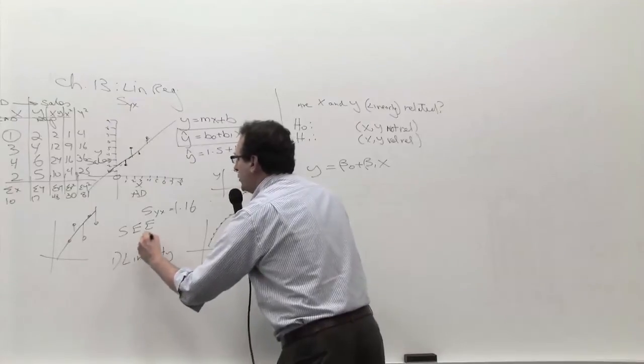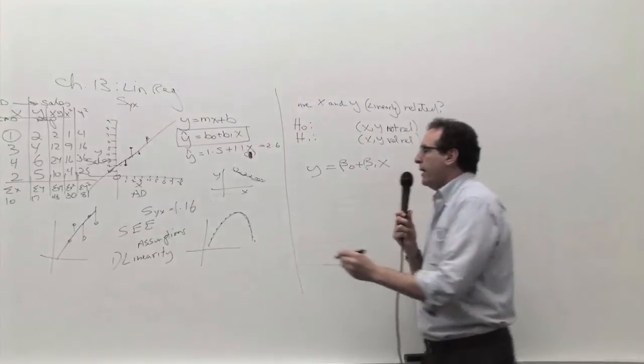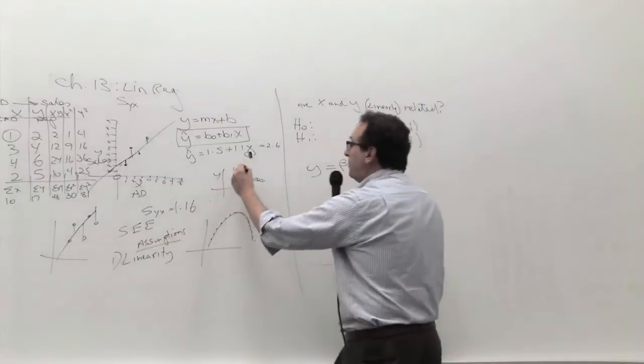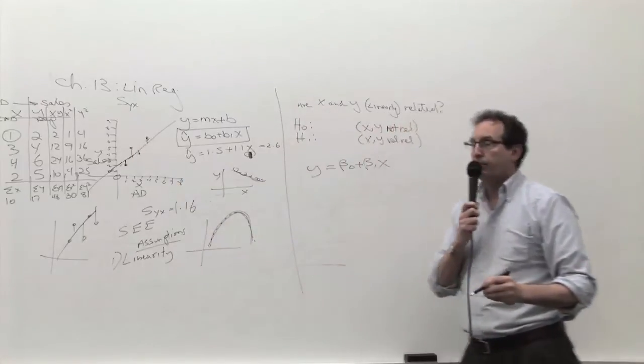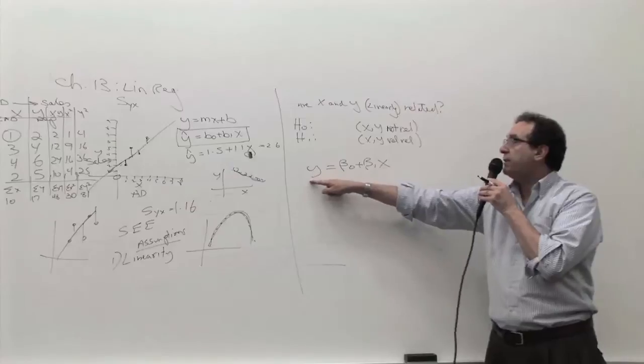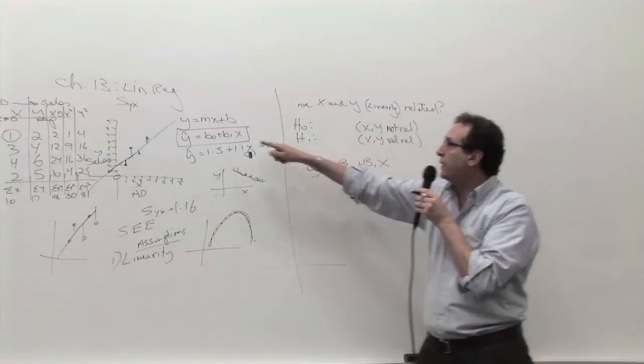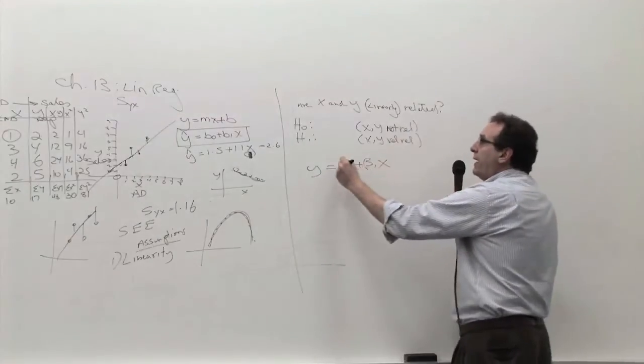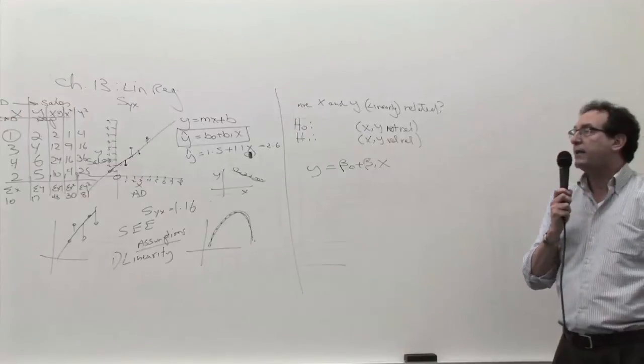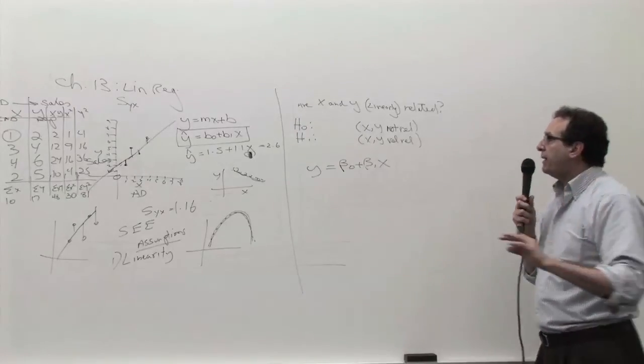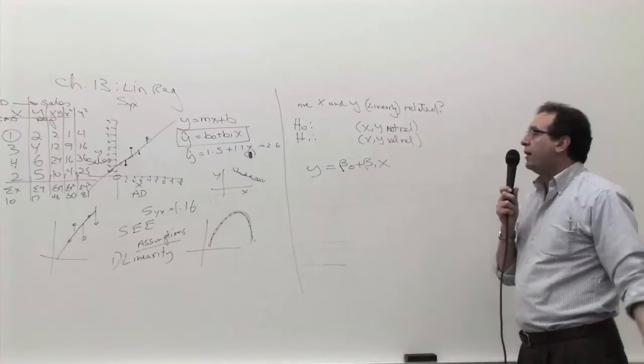So, these are the assumptions of the chapter that they have a linear relationship, which means it looks something like this or something like this, but not something like this. That's not linear. So, this basically is the equation of a straight line. So, the question, what's the difference between this straight line and this straight line? The difference is that this is the Greek letter β, which has nothing to do with the β from chapter 9 or chapter 10, the type 2 error. The Greek letter β represents the ideal intercept if you would have everybody in the entire population.